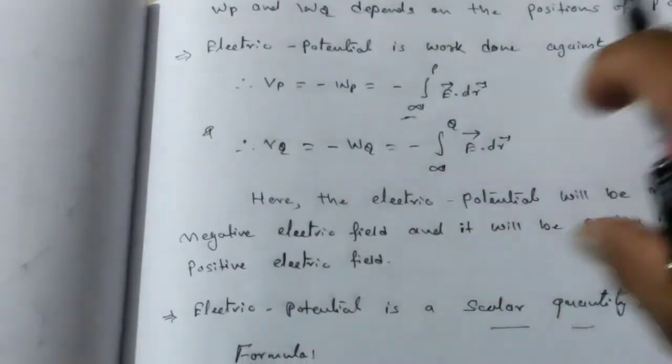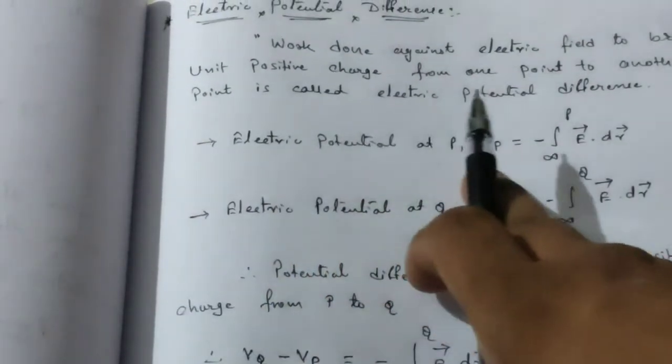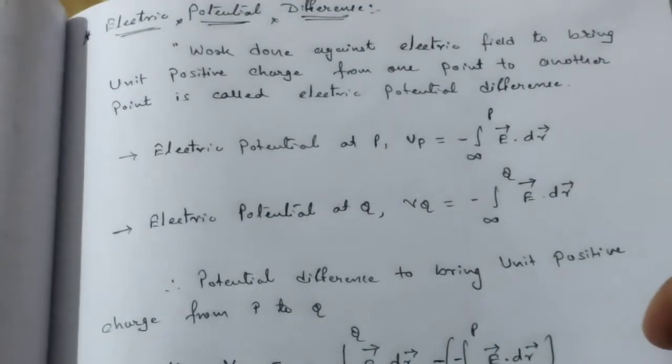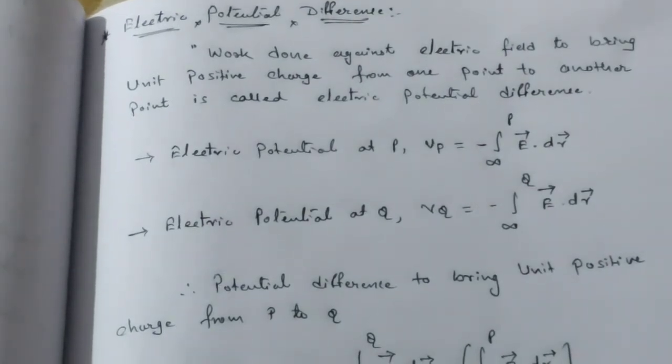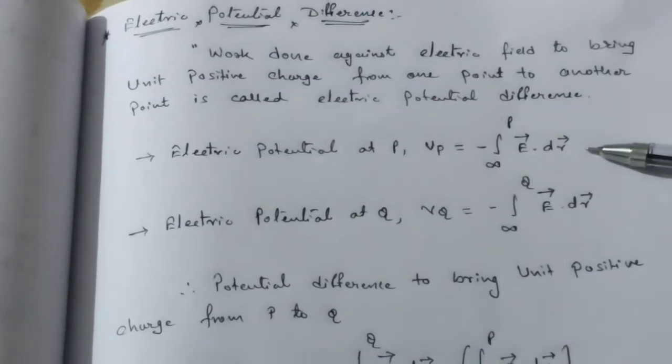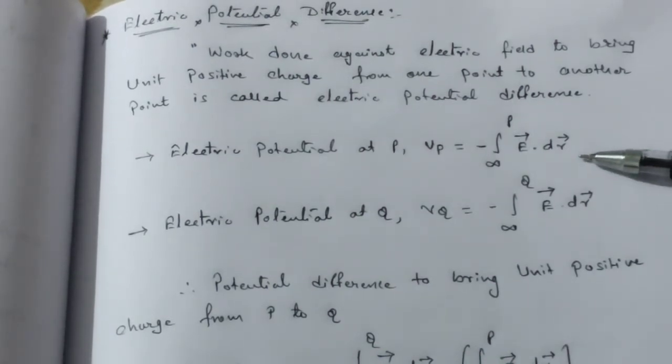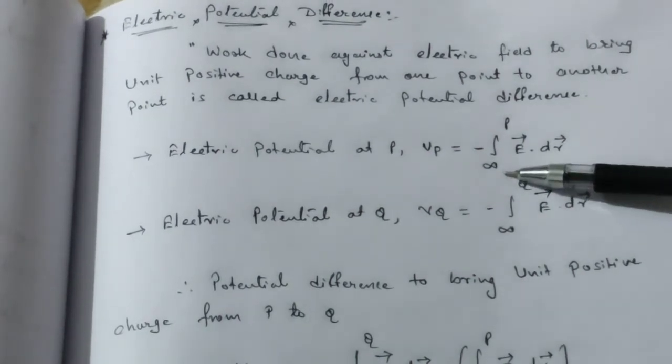Work done against electric field to bring unit positive charge from one point to another is called electric potential difference. Last time we found electric potential at point P equals minus integral infinity to P E dot dR, and similarly for point Q.